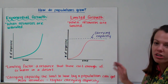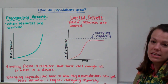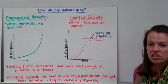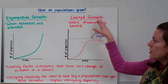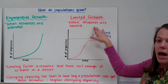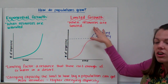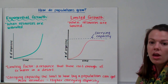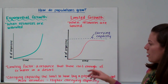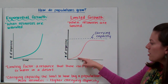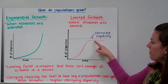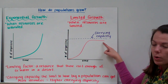Usually there isn't an infinite amount of resources, and the population just can't keep growing. That's called limited growth. Limited growth happens when resources are limited — when there's not enough of something for the population to keep growing. In that case, the population looks like exponential growth at first, but eventually levels off at a certain point.